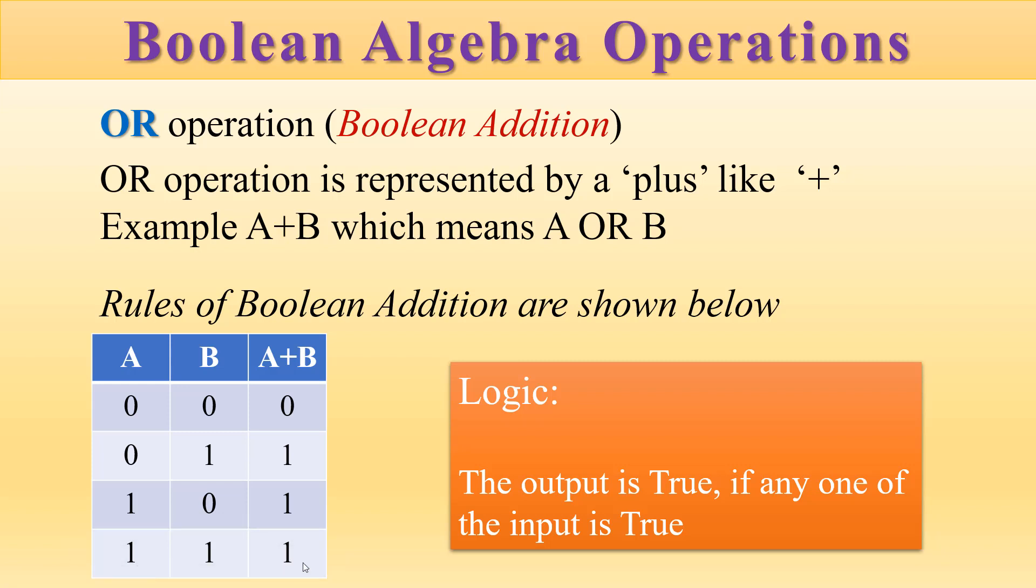This means that the output is true if any one of the inputs is true. That is the logic of the OR operation. Only if both inputs are 0, then the output is 0. Otherwise, in all other conditions, the output is 1.